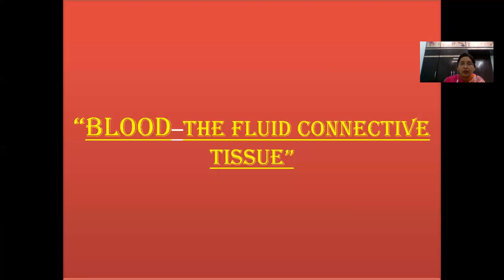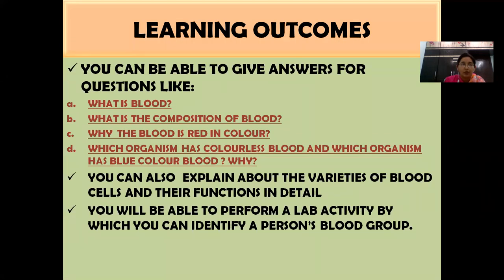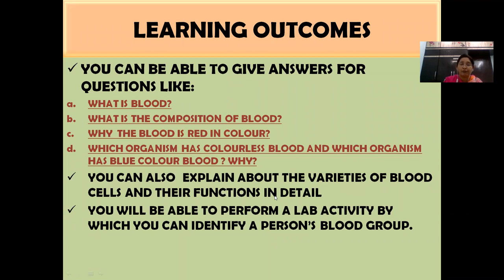After my class, the learning outcomes we are going to know: you can able to give answers for questions like what is blood, what is the composition of blood, why blood is red in color, which organism has colorless blood and which organism has blue color blood and why. You will also be able to explain about the varieties of blood cells and their functions, and perform a lab activity to identify a person's blood group.